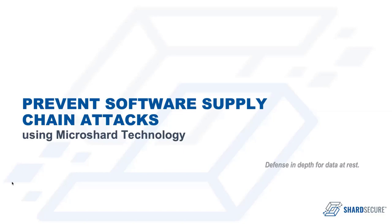MicroSharding is a new data security technology that provides defense in depth for your source code by ensuring it's incomplete, has zero value, and contains no sensitive information at rest, effectively mitigating the risks of certain supply chain attack vectors. In today's webinar, we'll cover the anatomy of a software supply chain attack, how MicroShard technology works, how MicroSharding can be implemented into your existing software development practice, and how Shard Secure protects our own source code.